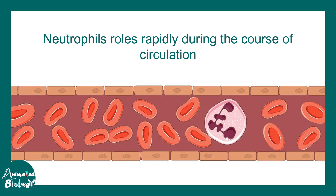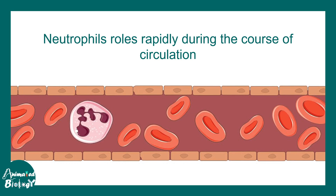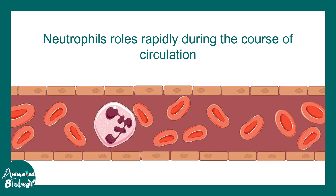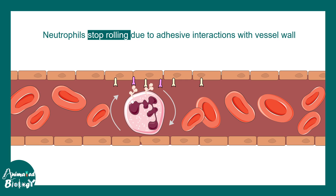Neutrophils generally roll very rapidly throughout the blood vessel when there is no inflammation. But when there is inflammation due to bacterial infection, certain cytokines alter the blood vessel — it expresses more adhesion molecules which slow down neutrophil rolling. So the first step of leukocyte extravasation is the halting or slowing down of the rolling process, mediated by several adhesion interactions.